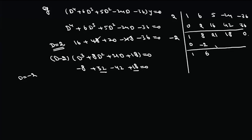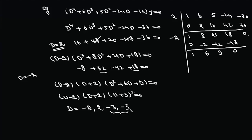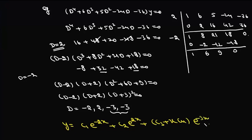We can factorize this as (D - 2)(D³ + 8D² + 21D + 18) = 0. Testing D = -2 for the cubic: -8 + 32 - 42 + 18 = 0, so D = -2 is a root. Using synthetic division again we get (D - 2)(D + 2)(D² + 6D + 9) = 0, which is (D - 2)(D + 2)(D + 3)² = 0. The roots are D = 2, D = -2, and D = -3 (double root). The general solution is y = c₁e⁻²ˣ + c₂e²ˣ + (c₃ + c₄x)e⁻³ˣ.